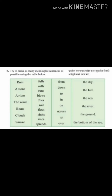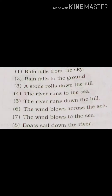See question number 5: Try to make as many meaningful sentences as possible using the tables below. First, rain falls from the sky. Second, rain falls to the ground. Third, a stone rolls down the hill. Four, the ribbon runs to the sea. Fifth, the ribbon runs down the hill. Six, the wind blows across the sea.